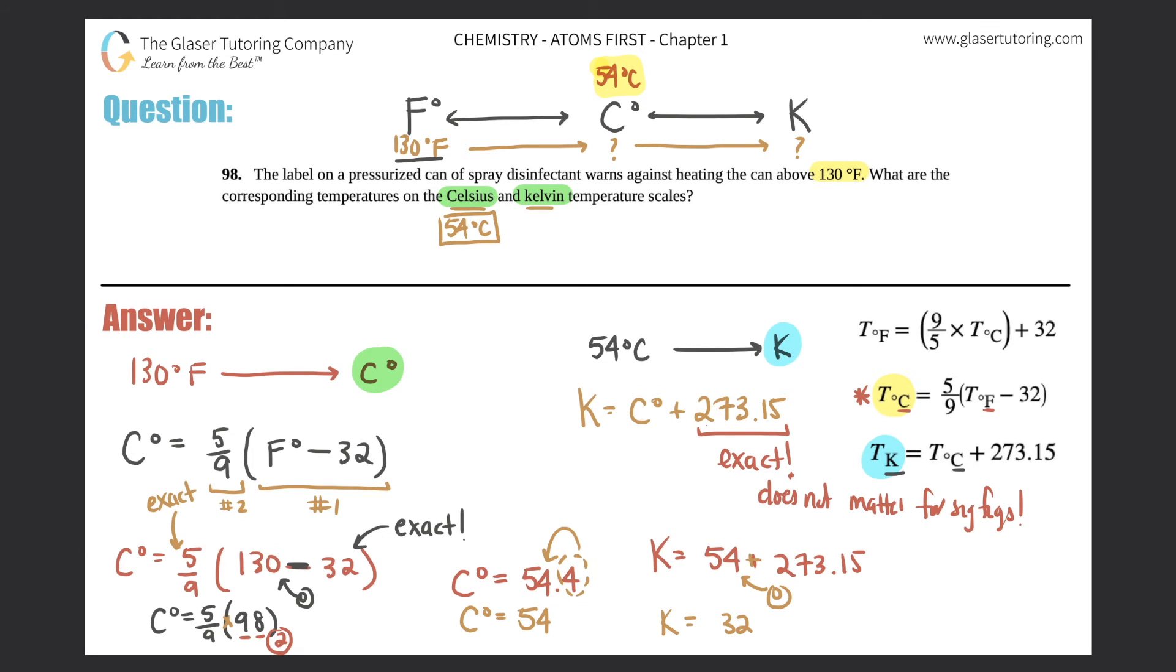54 + 273.15 = 327.15, but with nothing after the decimal, it's just 327 Kelvin. Box that one off - that's the answer for this part.